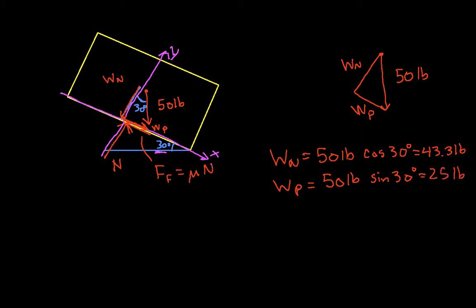So now if we apply the sum of forces in the y direction, let's actually do the y direction first. The sum of forces in the y direction is equal to zero. This says that N minus W N is equal to zero. We know what W N is. We just figured it out here. So this tells us that N is 43.3 pounds.